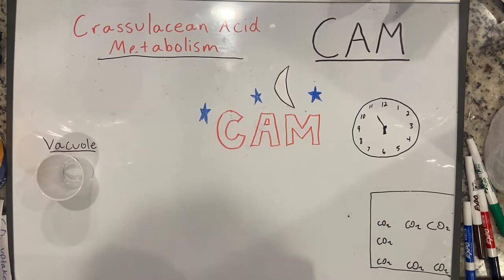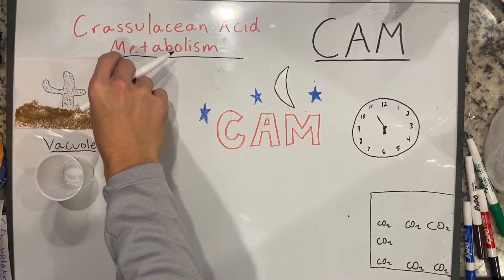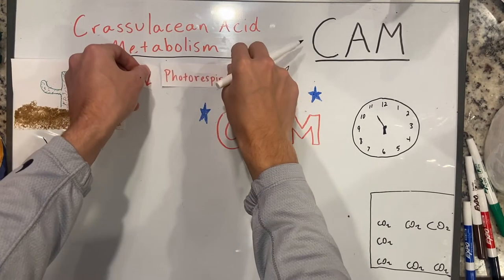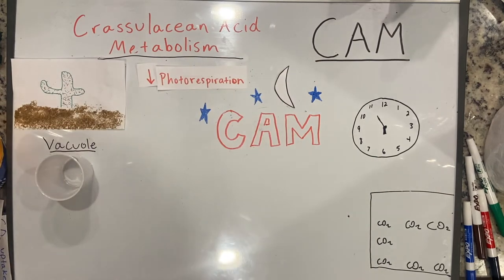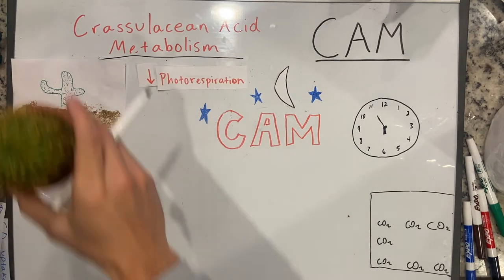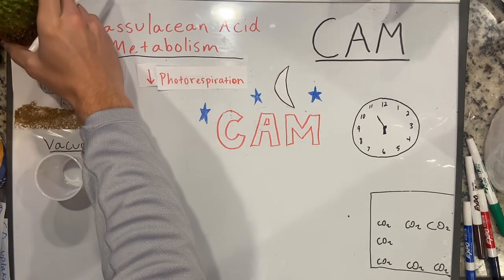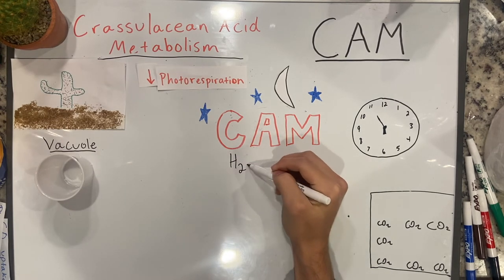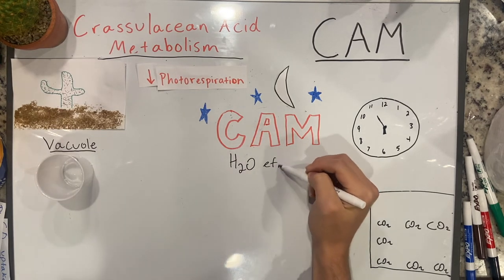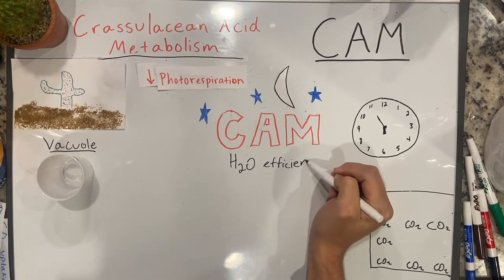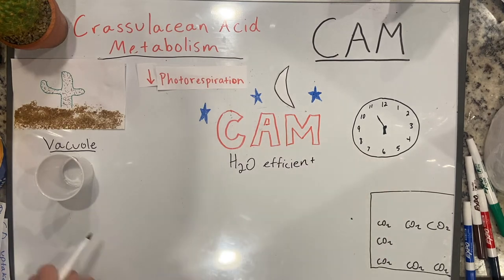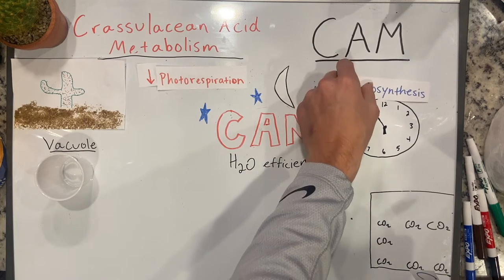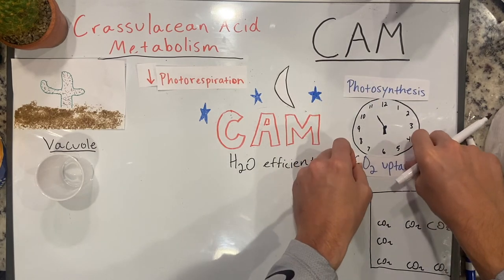This pathway occurs in very hot, dry environments such as deserts because it minimizes photorespiration. Examples of plants that undergo the CAM pathway include cacti and pineapples. Because of these plants' adaptations to very hot environments, CAM plants are very water efficient and thrive at night when temperatures are cooler and humidity is higher. CAM plants separate photosynthesis and CO2 uptake in time rather than in space.